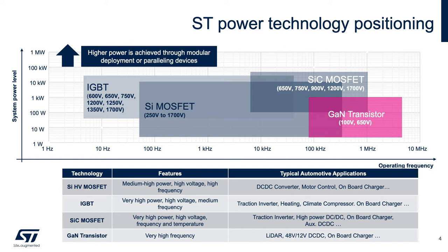Silicon carbide is a very robust material — great for high temperature and high power applications. SiC MOSFETs are the key enabler of high efficiency in power converters and inverters. With silicon carbide technology, not only can we deliver high current and high power, but we can also design converters and inverters with higher switching frequency to achieve system compactness and lightness. SiC is a key technology required for higher driving mileage in electric vehicles.